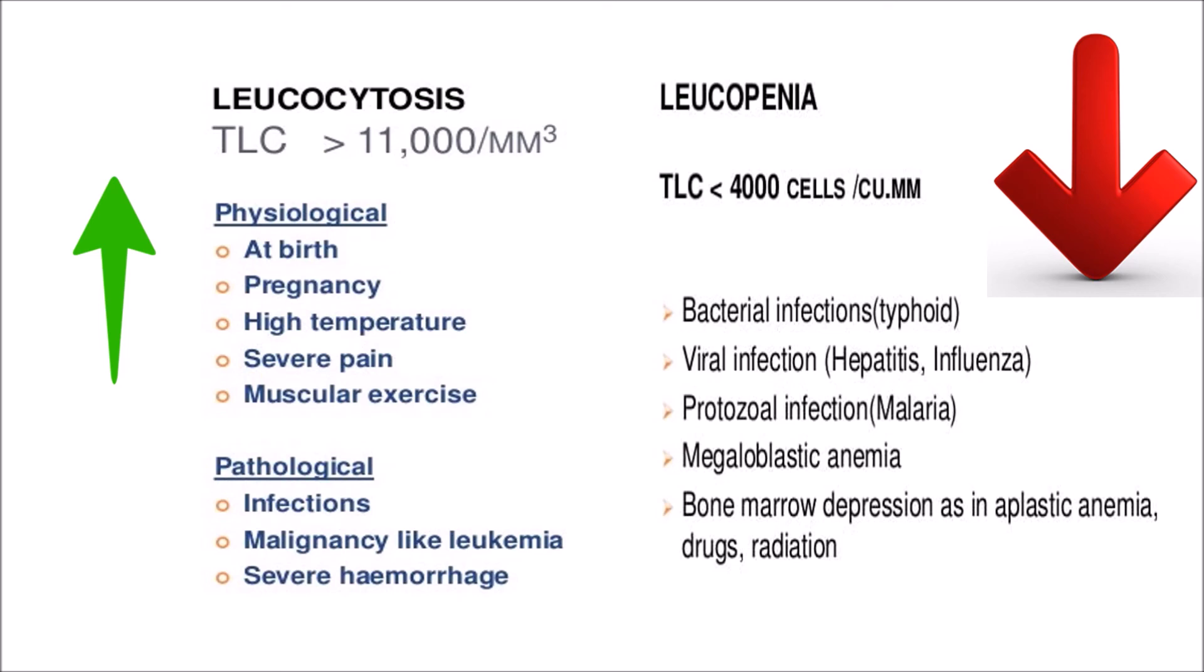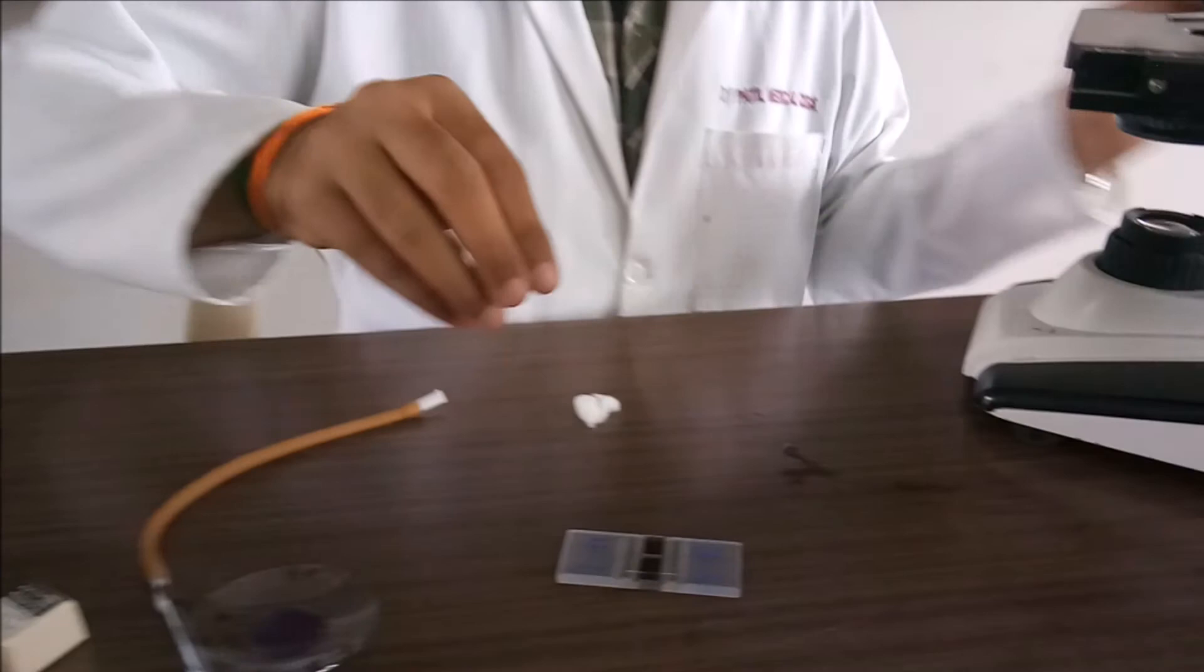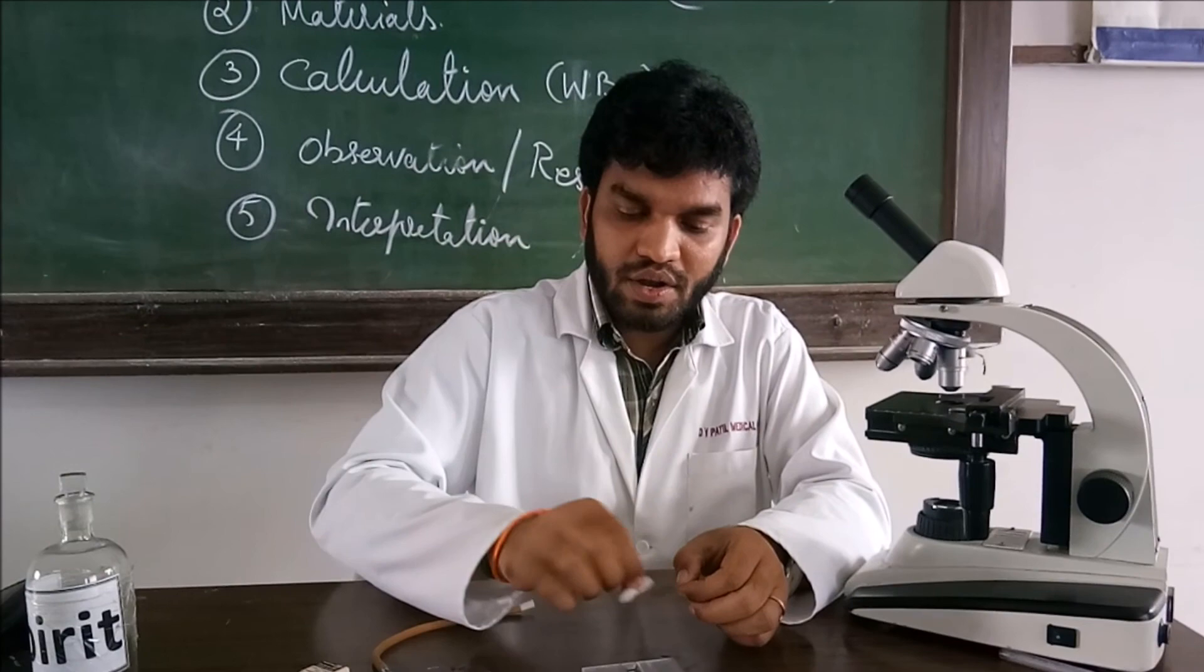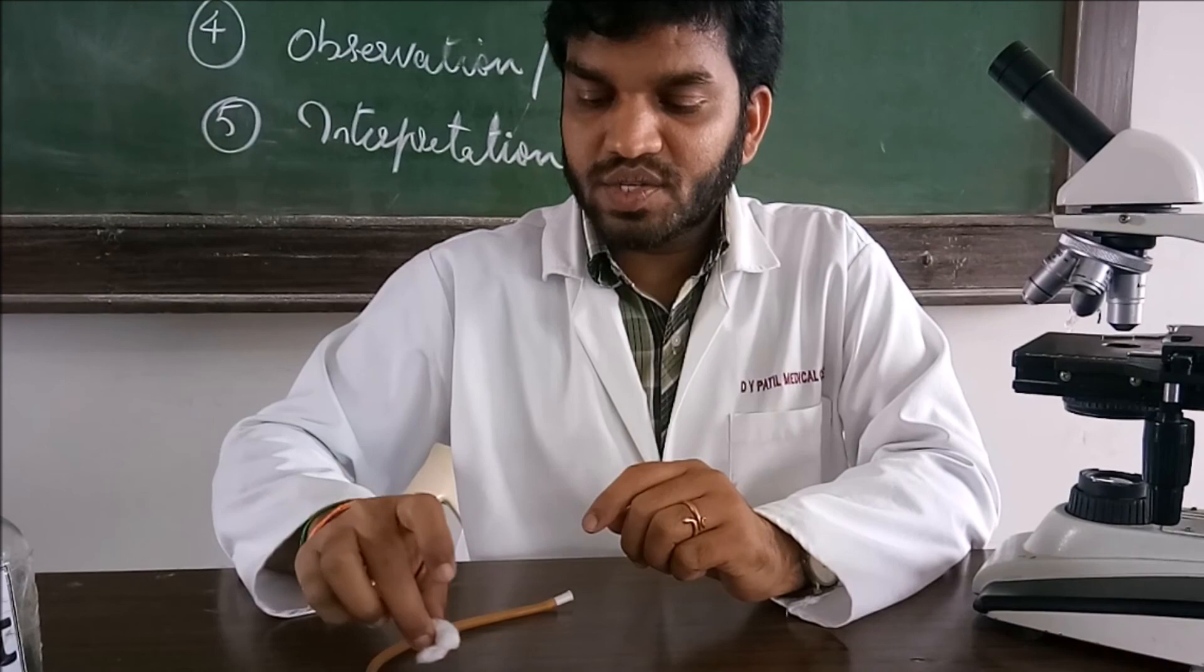Once you have done, remove the Neubauer chamber carefully. Clear this particular sample thoroughly with the cotton and cover slip also. Once you have done, wash it in the running tap water. And discard this entire lancet and whatever cotton swab we have used. And report it to your technician who is ever available. So thank you so much. We will see you in the next practical.